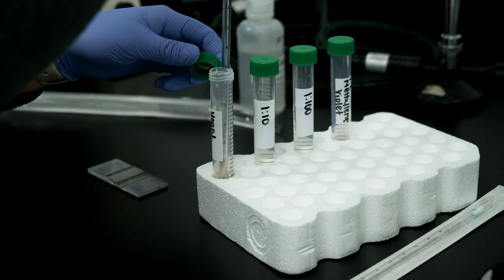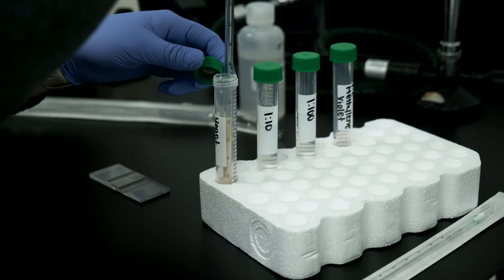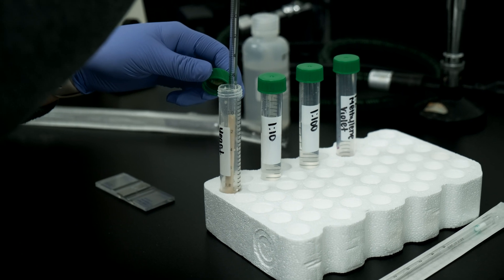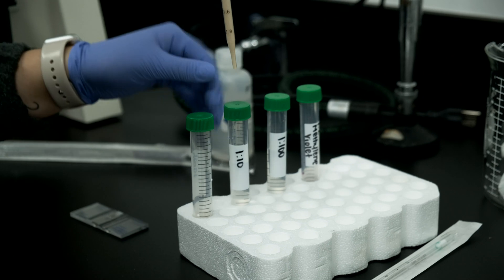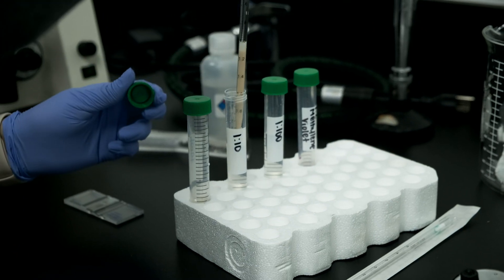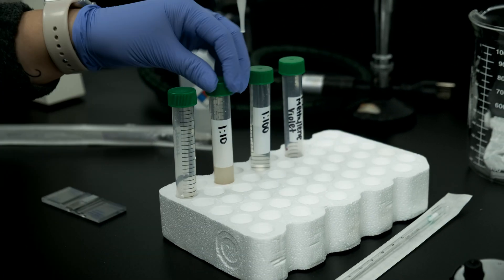First, we need to dilute the concentrated yeast slurry down to a 1 to 100 dilution. Begin by homogenizing your samples and then transferring 1 milliliter of yeast slurry into 9 milliliters of water. This will create a 1 to 10 dilution.